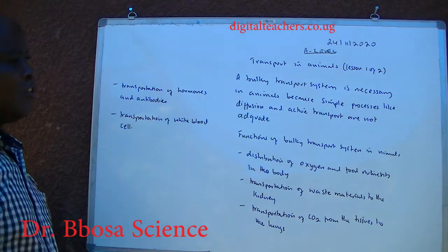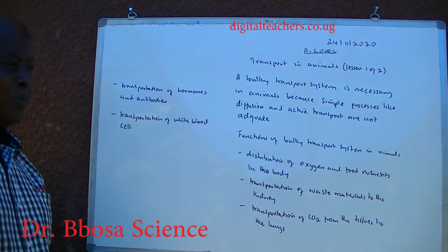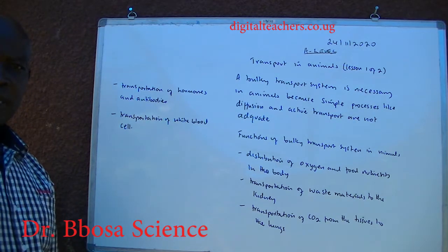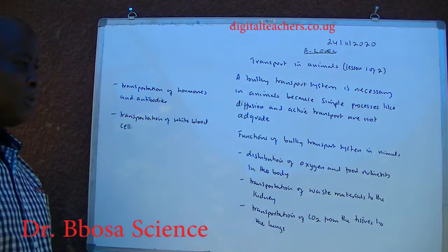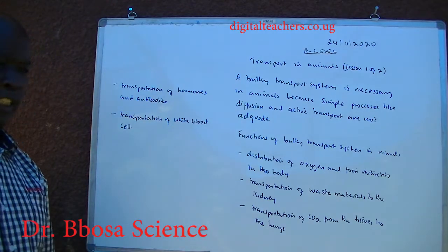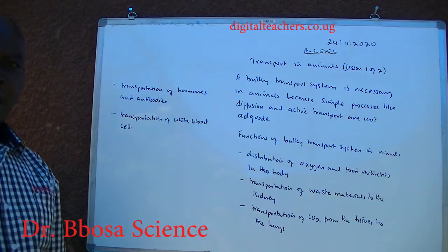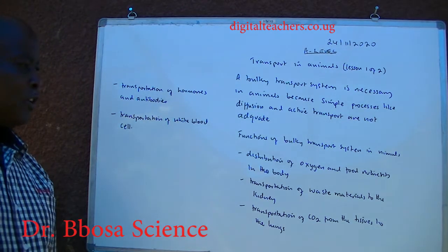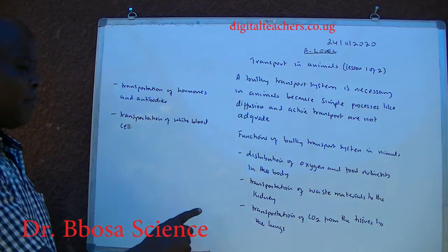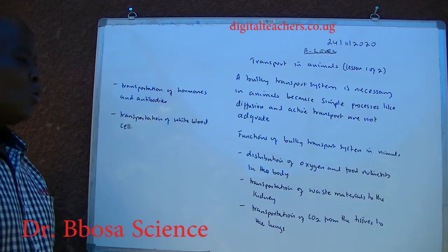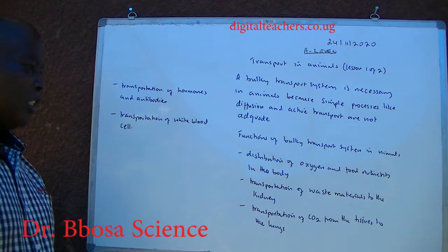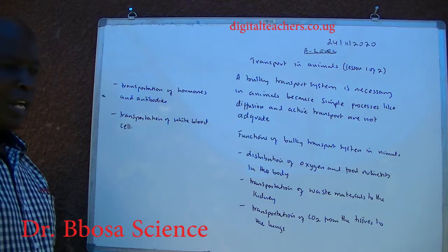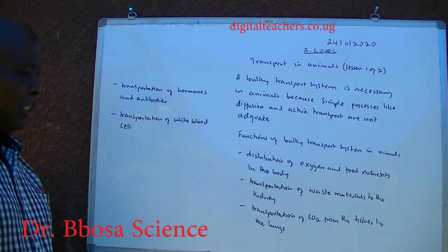Functions of baroque transport system in animals: 1. Distribution of oxygen and food nutrients in the body. 2. Transportation of waste materials to the kidney. 3. Transportation of carbon dioxide from the tissue to the lungs.